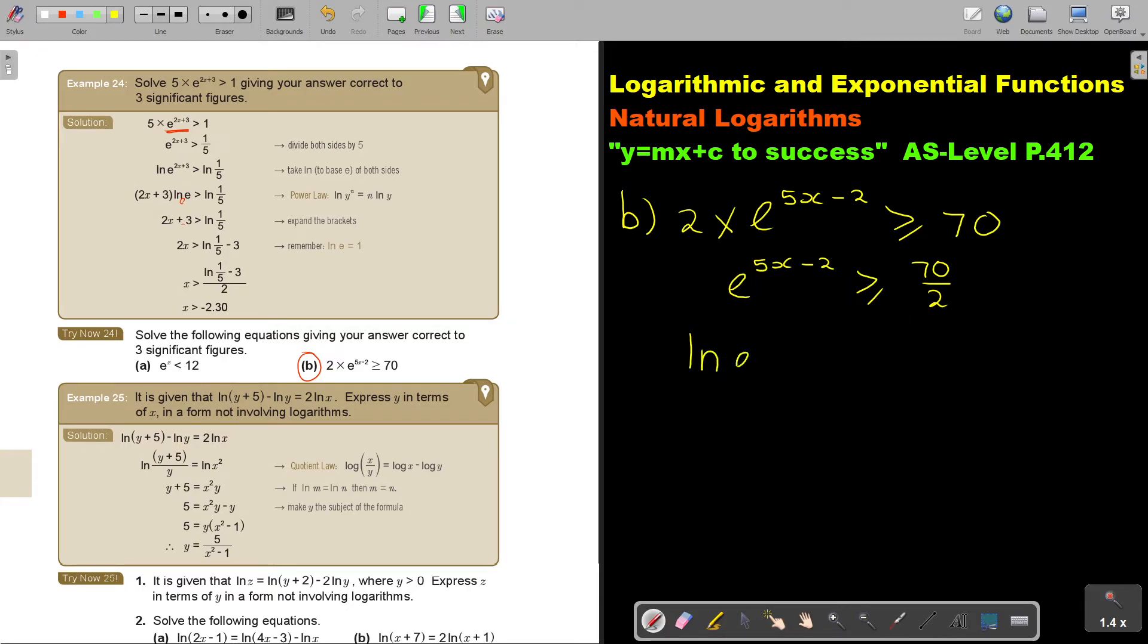So ln e 5x minus 2 is bigger and equal to ln 35. Then I'm going to bring that down, do the power law. So I'm going to have 5x minus 2 times ln e is bigger and equal to ln 35. This is e, this is becoming 1.